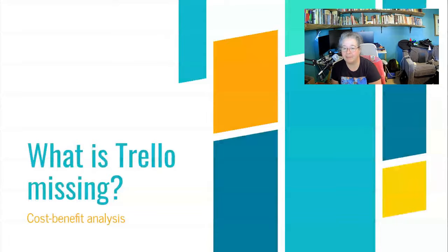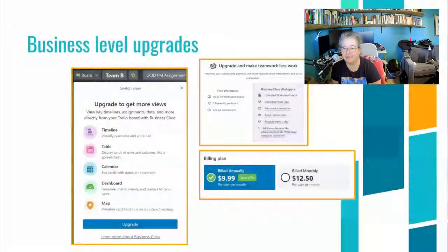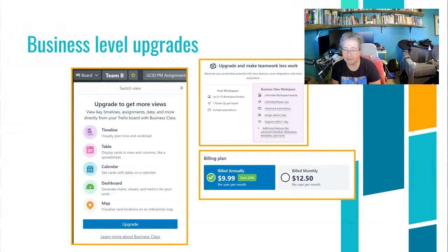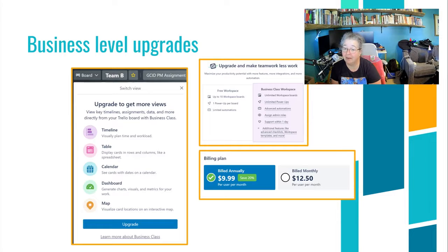Trello is also missing a cost-benefit analysis, and I just don't have the scope within this project to do that. But there are business-level upgrades that I think are appealing. The timeline I showed you previously is actually an upgrade. If it was adapted across a collaboration, I would definitely upgrade to use the timeline — it looks like a Gantt chart and would help you prioritize and see how flow is happening. There's more integration with calendars, so if you're married to something like Google Calendar, it would help you do that. If you had remote locations of people whose locations were constantly changing, integrating a map would also be really useful.